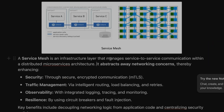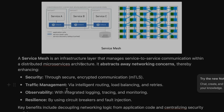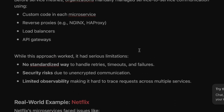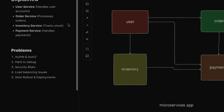A service mesh is an infrastructure layer that manages service-to-service communication within a distributed microservices architecture. It abstracts away networking concerns, providing security through mutual TLS, traffic management via intelligent routing, load balancing and retries, observability by integrating with tools like Prometheus and Grafana, and resilience using circuit breakers and fault injection. Before service mesh, companies manually managed service communication by adding code in each microservice or using reverse proxies like NGINX, HAProxy, load balancers, and API gateways.